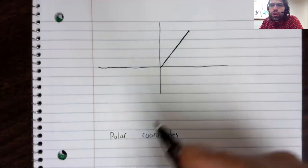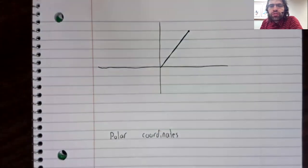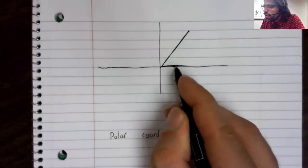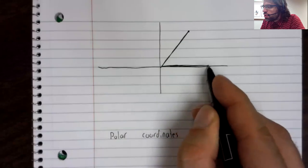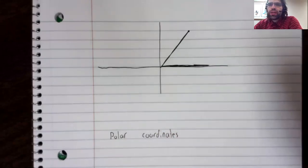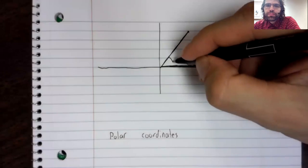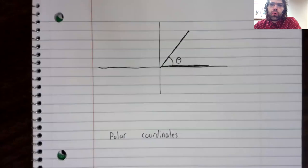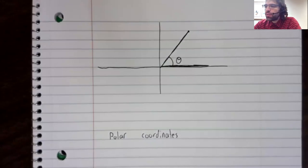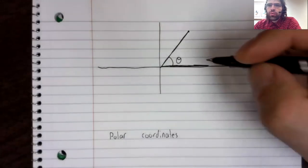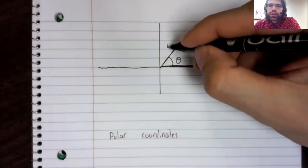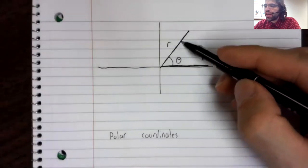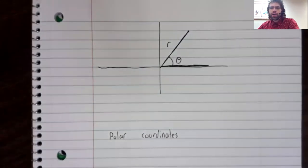First, draw a line segment from the origin to the point. That line segment, together with this ray, defines an angle theta. And that angle, together with the length of this line segment, which we'll call r, determines the point.